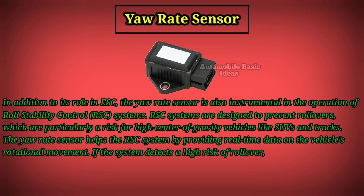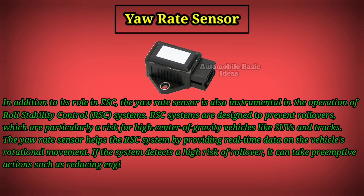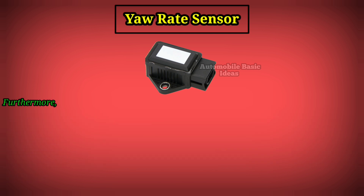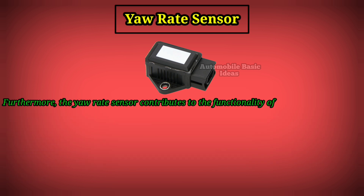If the system detects a high risk of rollover, it can take preemptive actions such as reducing engine power and applying brakes to specific wheels to stabilize the vehicle. Furthermore, the yaw rate sensor contributes to the functionality of advanced driving aids.